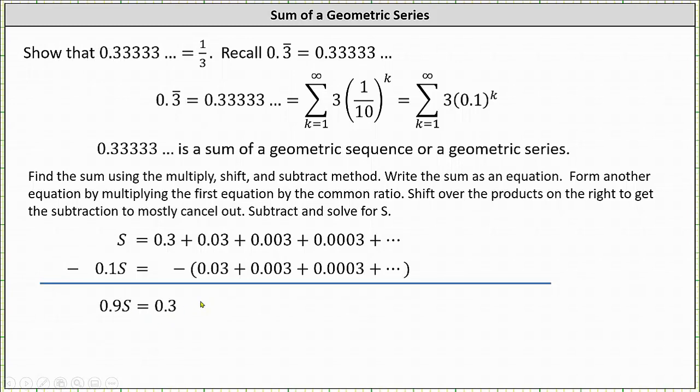Now to solve for s, we divide both sides of the equation by 0.9, which gives us s equals 1 third. And this does show 0.3 repeating is equal to 1 third. I hope you found this helpful.